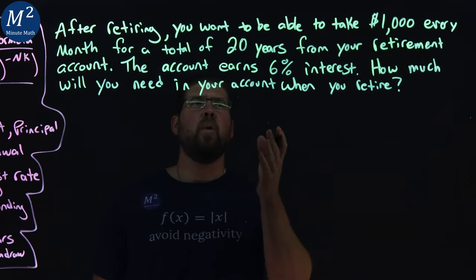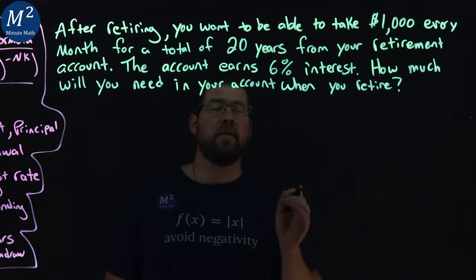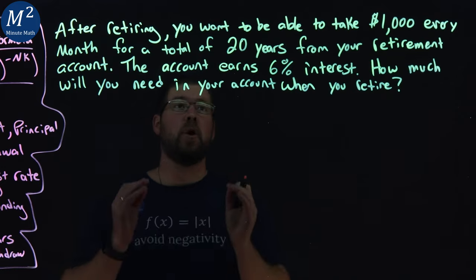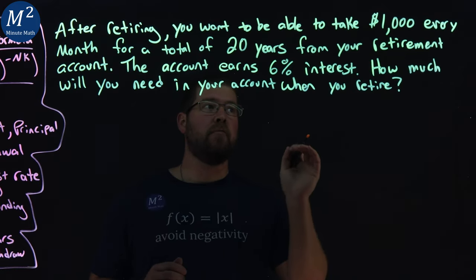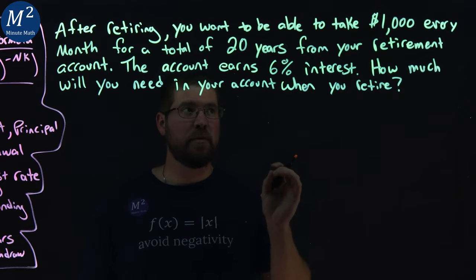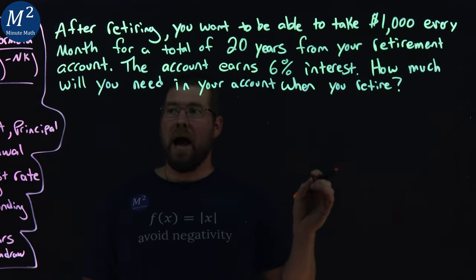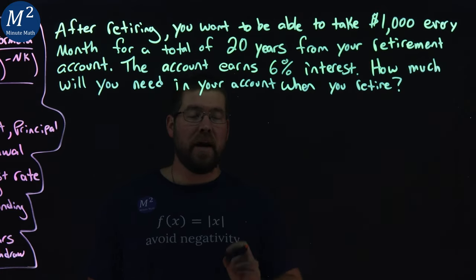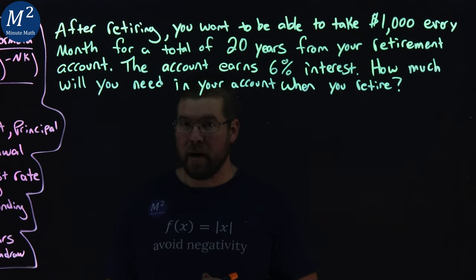After retiring, you want to be able to take $1,000 every month for a total of 20 years from your retirement account. The account earns 6% interest. How much will you need in your account when you retire?